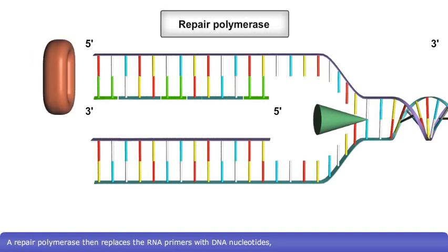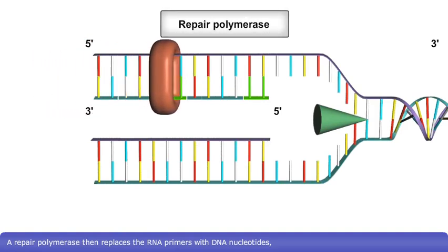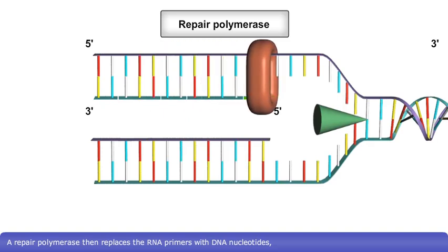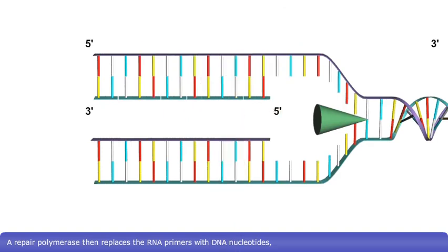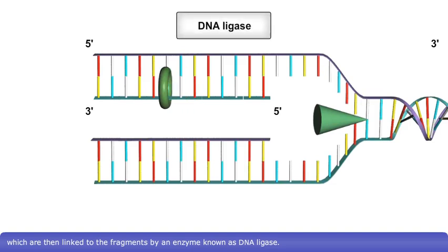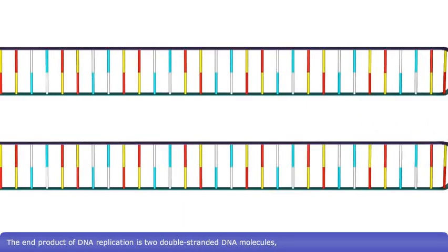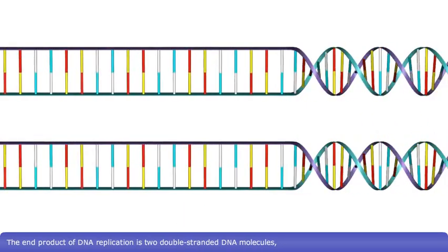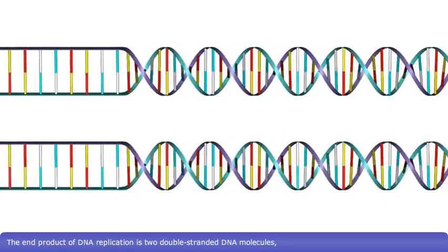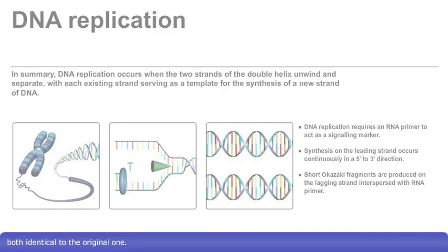A repair polymerase then replaces the RNA primers with DNA nucleotides, which are then linked to the fragments by an enzyme known as DNA ligase. The end product of DNA replication is two double-stranded DNA molecules, both identical to the original one.